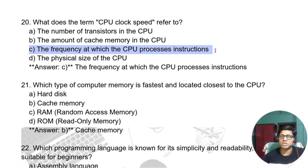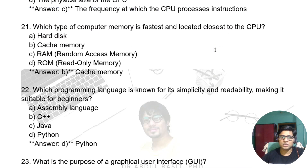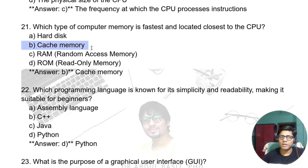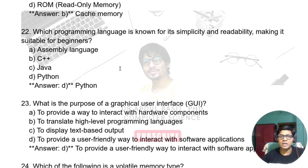What does the term CPU clock speed refer to? It refers to the frequency at which the CPU processes instructions. Which type of computer memory is fastest and located closest to the CPU? It is cache memory, which is located closest to the CPU.